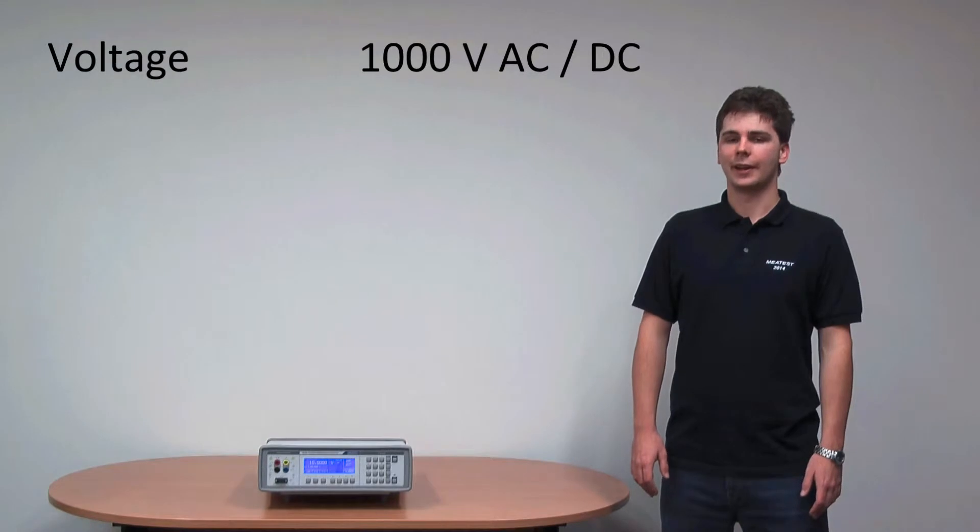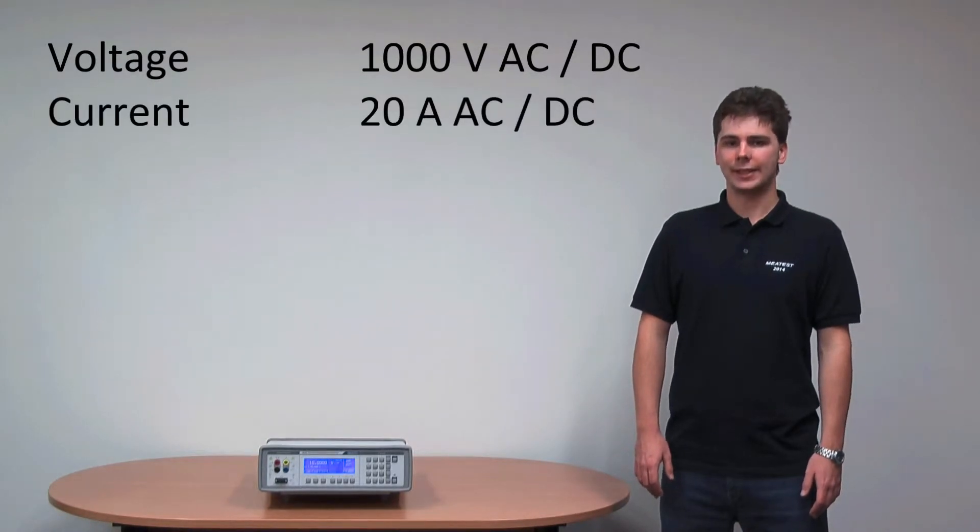But despite its compact dimensions, the M143 can still generate voltage up to 1 kV and current up to 20A both AC and DC.